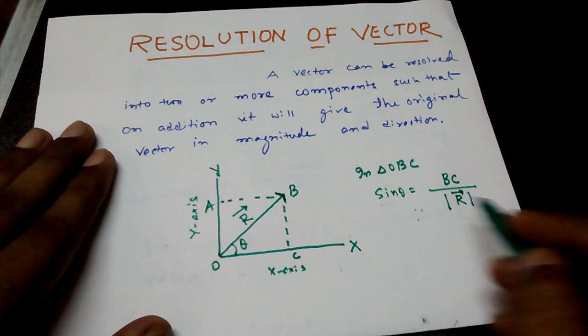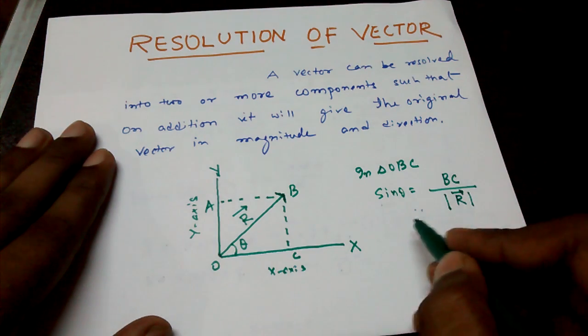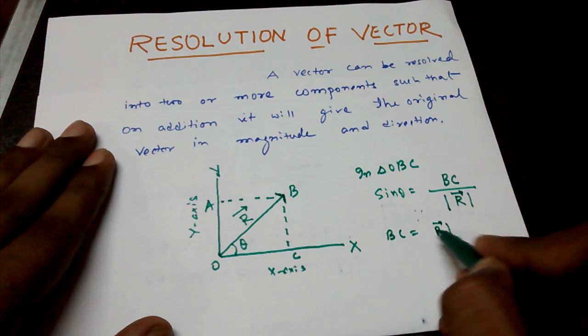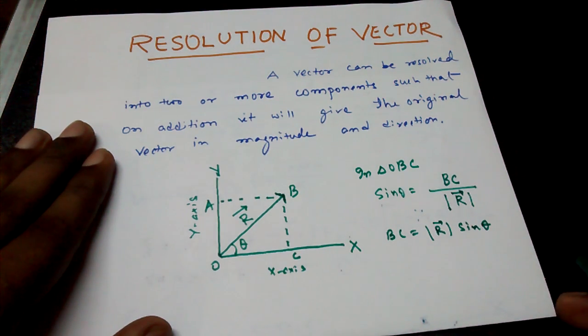And after just doing cross multiplication, I will get BC is equal to R sin theta.